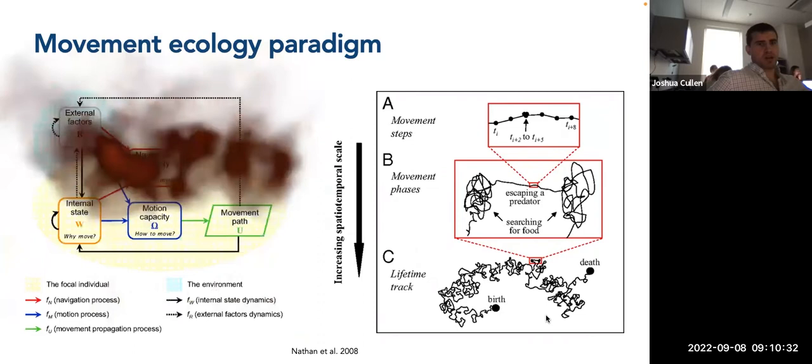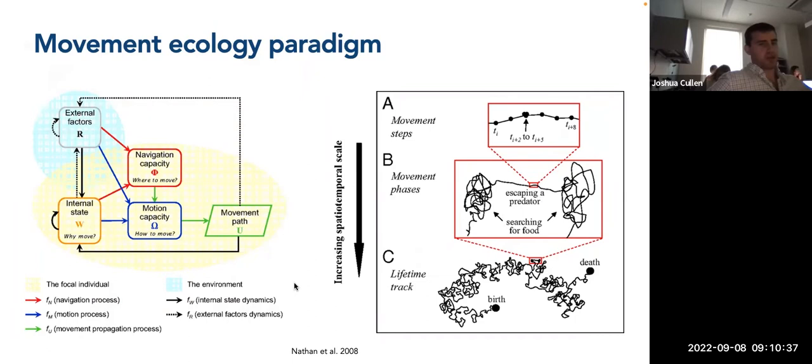So this is essentially the movement ecology paradigm that was proposed by Nathan and colleagues, where they have these different variables that are driving a lot of these processes. We have some internal or individual based ones here that are in this yellow ellipse, and then external that are in this light blue ellipse here. So focusing on the individual, we have things such as the internal states. So why would the animal move? This might impact things such as navigation capacity, whether they're following scent trails, maybe geomagnetic fields, all kinds of other things related to navigation. And this can in turn potentially affect motion capacity, so how they're moving. And this also depends on what kind of environment they're in, what medium.